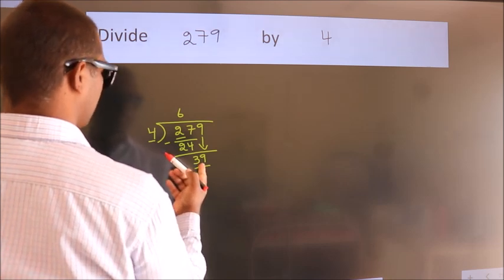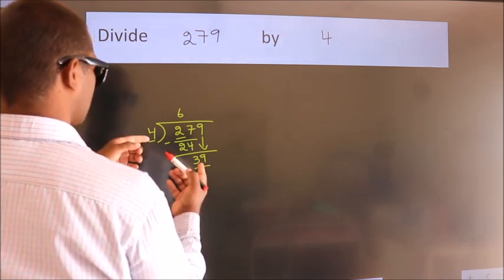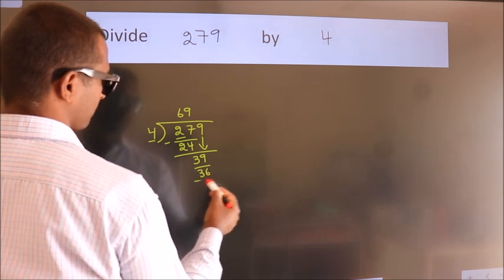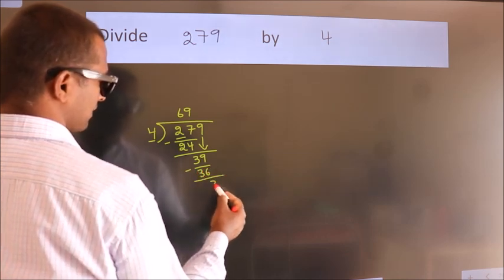A number close to 39 in the 4 table is 4 times 9, which is 36. Now we subtract. We get 3.